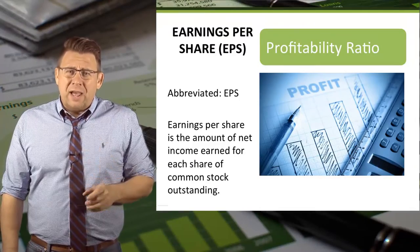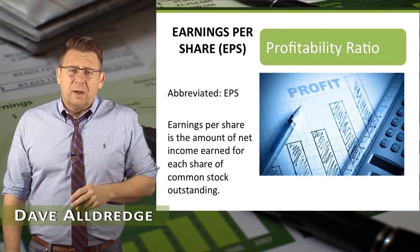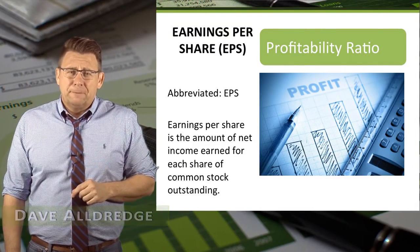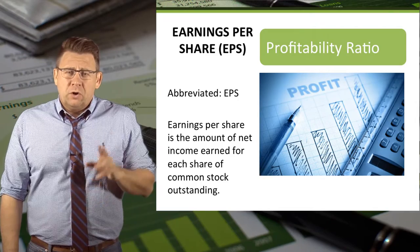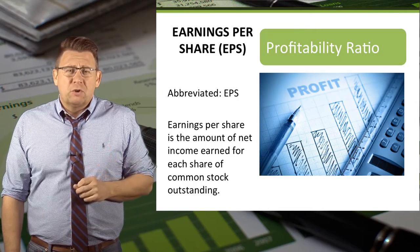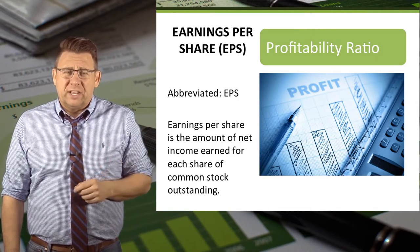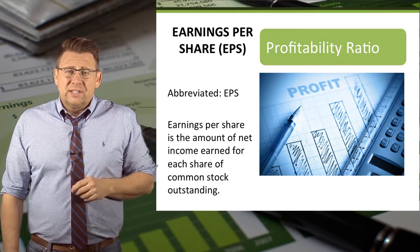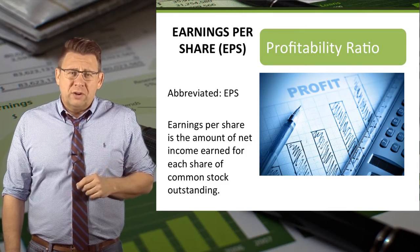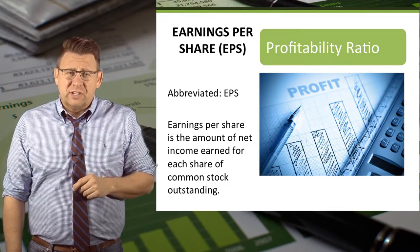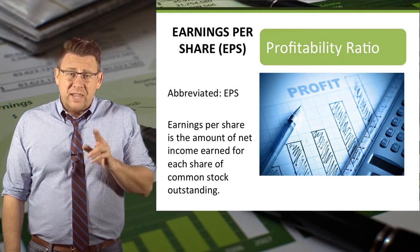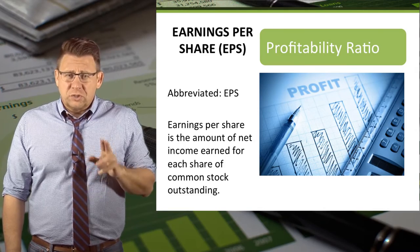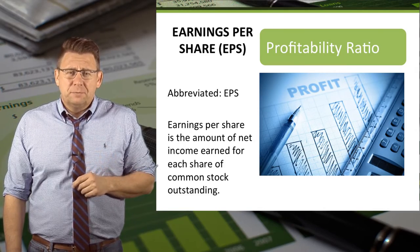Earnings per share is the amount of net income earned for each share of common stock outstanding. It is the most widely quoted of all the financial ratios — the only ratio that appears in the financial statements, specifically on the income statement. Earnings per share is a measure of profitability.